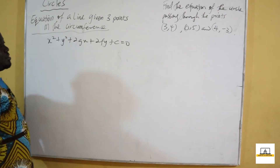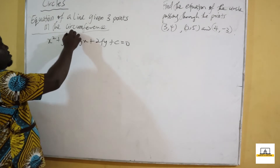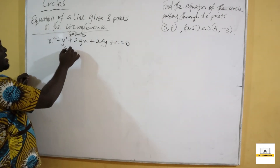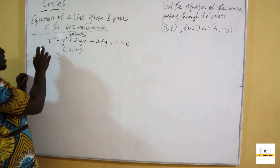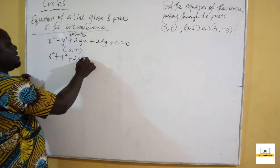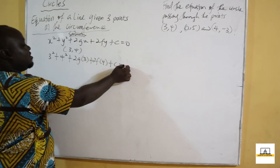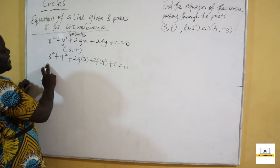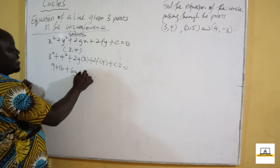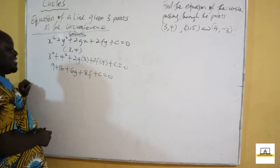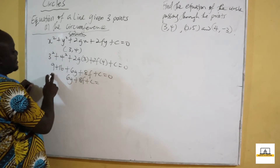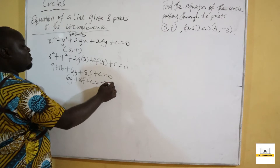Using the general equation, we substitute the first point X equals 3, Y equals 4. We get 3 squared plus 4 squared plus 2G times 3 plus 2F times 4 plus C equals zero, giving 9 plus 16 plus 6G plus 8F plus C equals zero. So 6G plus 8F plus C equals minus 25. This is equation 1.